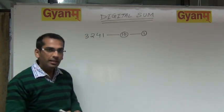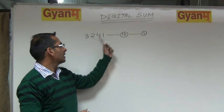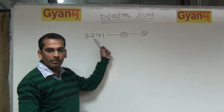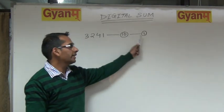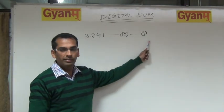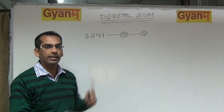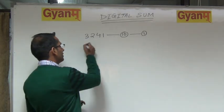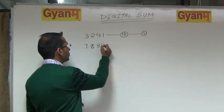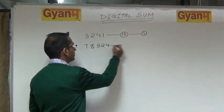So we can say the digital sum of the number 3, 2, 4, 1 is 1. Let us consider another example: 7, 8, 3, 2, 4.